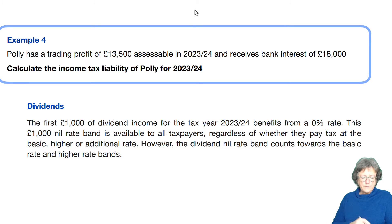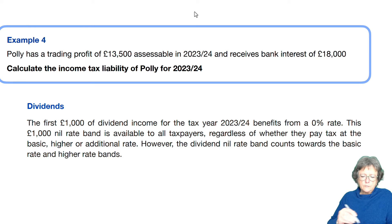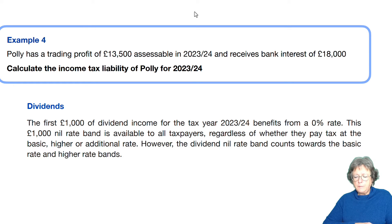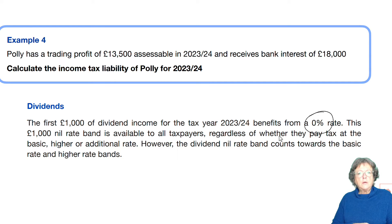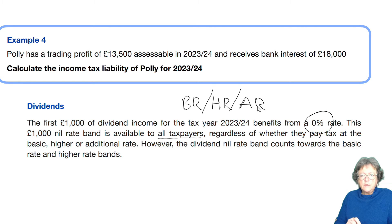Now we're going to look at dividends. The first £1,000 of dividend income — that's income from shares received having invested in a limited company — benefits from a nil percent rate. Dividends are received when you buy shares in a limited company. This £1,000 nil rate band is available to all taxpayers: basic rate, high rate, and additional rate — which isn't the case for the savings nil rate band.